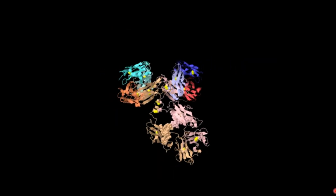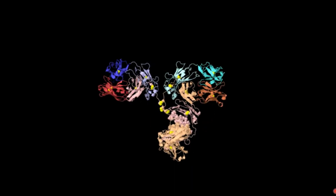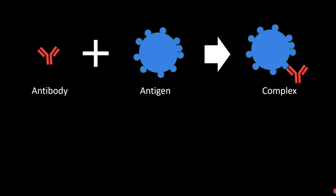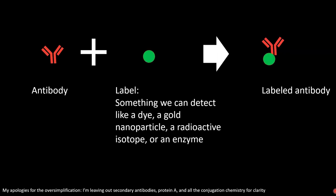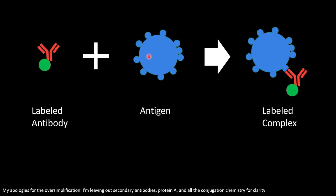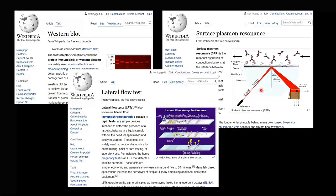I draw antibodies as a little Y shape, but there's a reason for that — they actually look more like this, as that Y is inspired by a real natural structure. When an antibody is exposed to the antigen, it connects up to form a complex, which is how the immune system binds and kills things in nature. But we can use them for something else. If we take an antibody and chemically attach a label — something we can detect, like a dye, a gold nanoparticle, a radioactive isotope, or an enzyme — we have a labeled antibody. That labeled antibody can then be applied to the antigen to make a labeled complex we can visualize under the microscope. This is a truly foundational technique in bioanalytical chemistry and molecular biology — the idea that you can specifically label a very specific protein, virus, or anything in biology is really important.